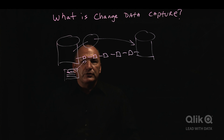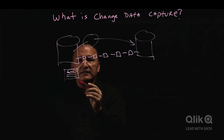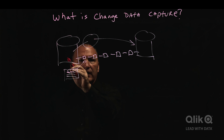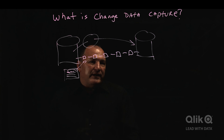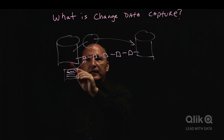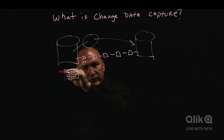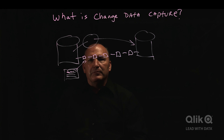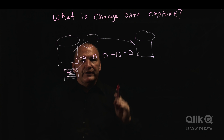The two other ways are more invasive to the source systems. One is query-based, where you need something like a timestamp in the data itself, and you query the data to pick up changes. Another way is triggers — you change the application to trigger a write to a change table and then move it.